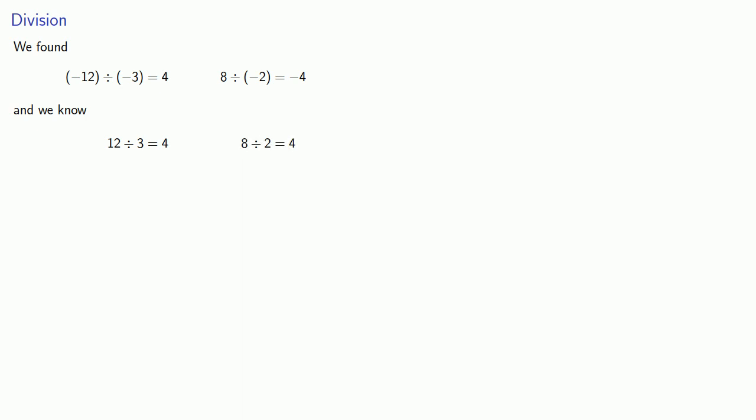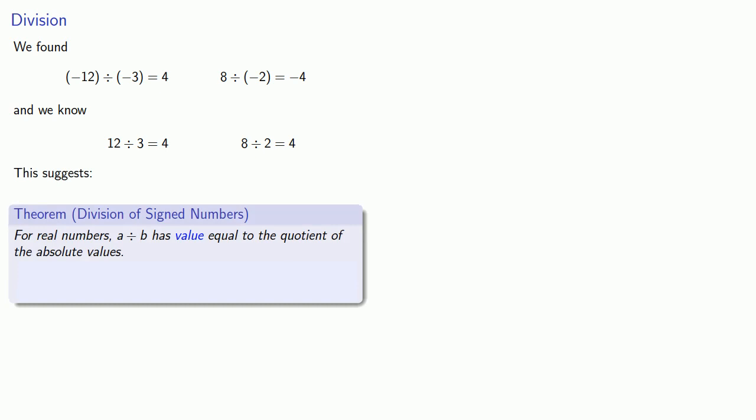And if we look at how the signs are distributed, this suggests the following result. For real numbers A divided by B, the value equals the quotient of the absolute values. If A and B have the same sign, the quotient will be positive, while if A and B have opposite signs, the quotient will be negative.